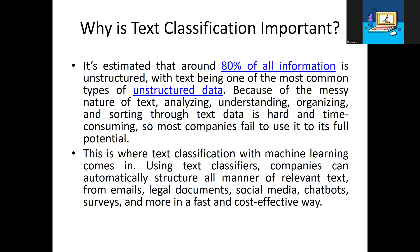Unstructured means data in the form of text, images, videos, and similar formats. Using Text Classification, companies can automatically structure all manner of relevant text from emails, legal documents, social media, chatbots, surveys, and more in a fast and effective way.